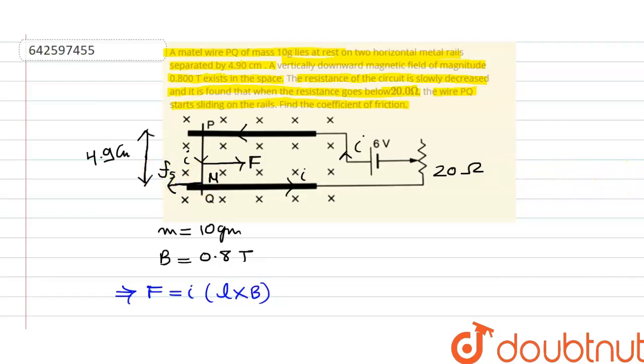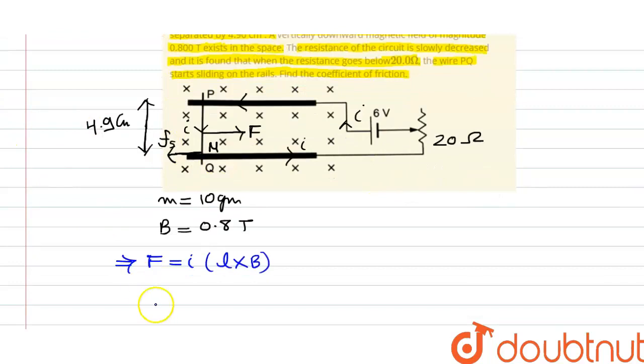So when wire starts sliding, wire can only start sliding when friction force is balanced by magnetic force.